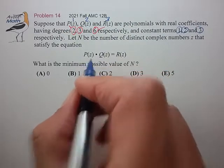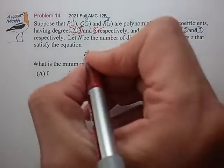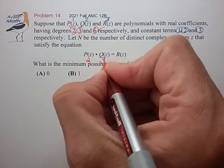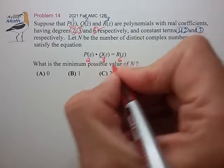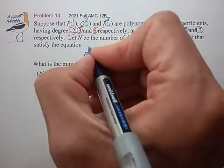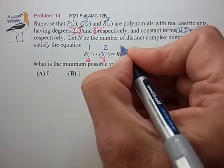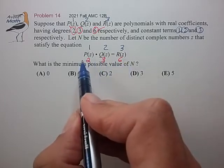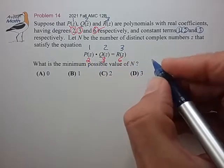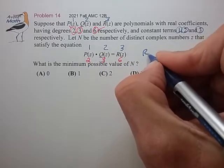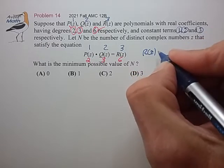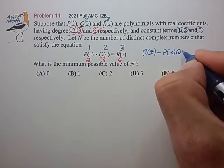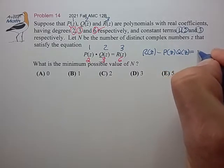So to reiterate, P(z) has degree 2, Q(z) has degree 3, R(z) degree 6, and constant terms 1, 2, and 3. So let me write this equation in a more standard form, something that equals 0. So let me write this as R(z) minus P(z) times Q(z), equaling 0.